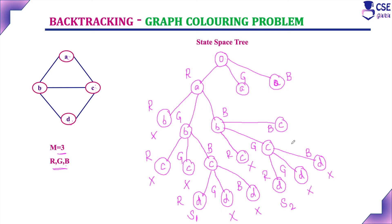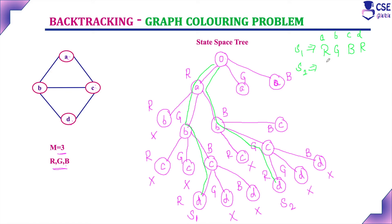Similarly, backtrack and assign blue color for vertex A — here also you will get two more solutions if you construct the complete state space tree. The solution path: solution 1 is vertex A with red, B with green, C with blue, and D with red. Solution 2 is A with red, B with blue, C with green, and D with red.